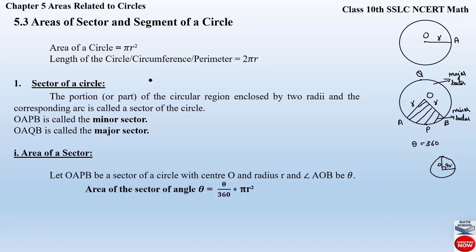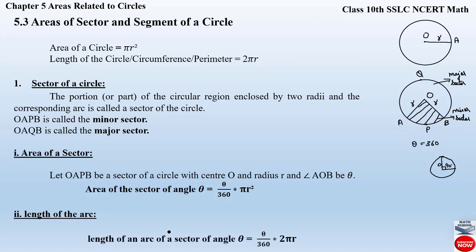Next, let us find the length of the arc of the sector. The sector OAPB has arc APB. The length of the whole circle, that is the circumference, is given by 2πr. In the same way we wrote the formula for the area of the sector of angle theta, we write the formula for the length of an arc of a sector of angle theta as θ/360 × 2πr. Since here we are finding the length of the arc, we multiply by the circumference, whereas for the area of the sector we multiply by the area of the circle formula. These two formulas are very important and you must remember them.